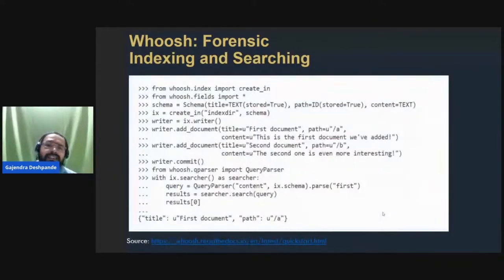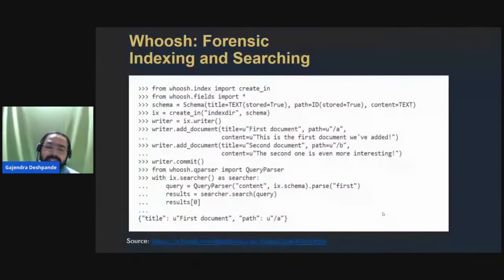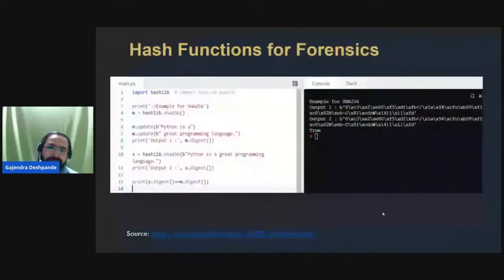To use Whoosh, first import the required modules such as create_in and fields. Then add paths of different files using the add_document function, which takes parameters for title and content. Once URLs are added, use the query parser module to search for keywords. If those keywords are present, Whoosh will identify the particular location where the keyword is found.